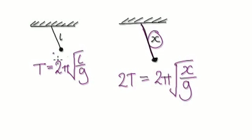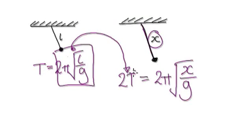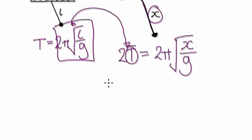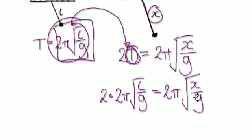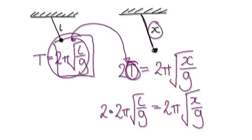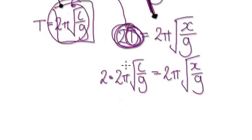Since T = 2π√(L/G), substitute this into the left side. That gives us 2 × 2π√(L/G) on the left, and 2π√(x/G) on the right. We are trying to find x — the length of the string that gives twice the time.